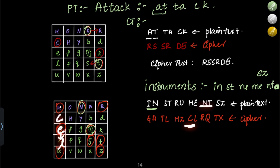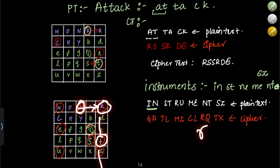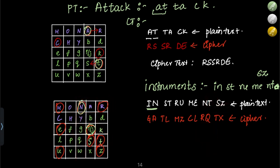For NT: N is here, T is here — different row and column. For N, take the letter in N's row at T's column, which is R. For T, take the letter in T's row at N's column, which is Q. So NT encrypts to RQ. For SZ: S is here, Z is here; S gives T and Z gives X. So SZ encrypts to TX.